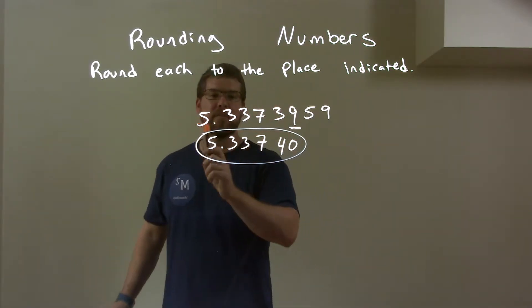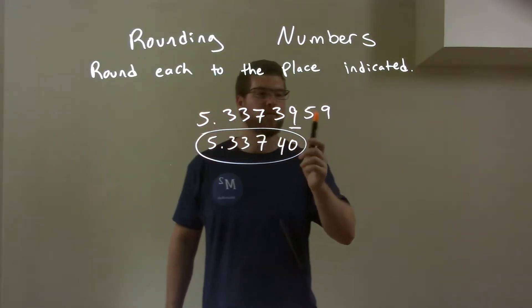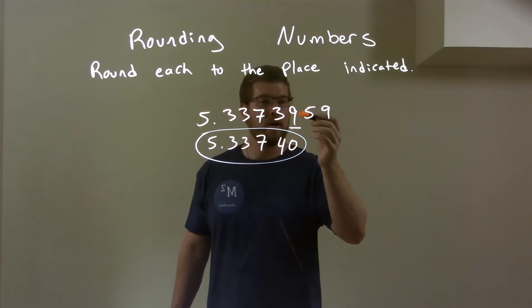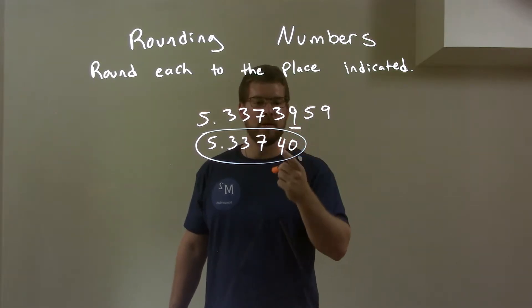Quick recap, we're given 5.3373959. We're rounding on this 9. We look to the right, and the 5. The 5 causes the 9 to round up to a 10. 0 comes down, we add the 1 to the 3, 4.